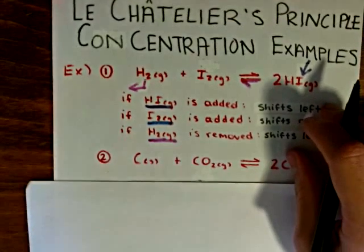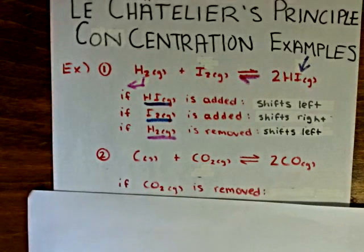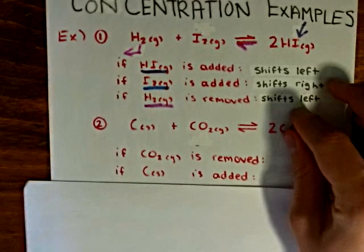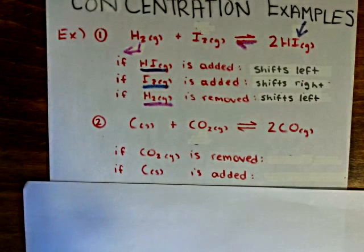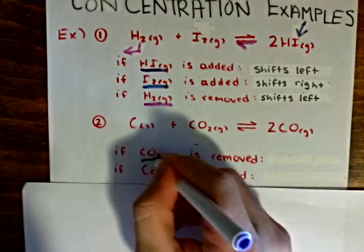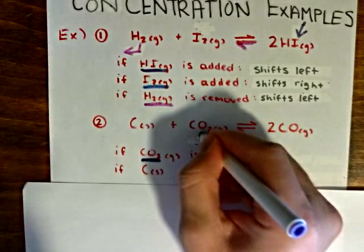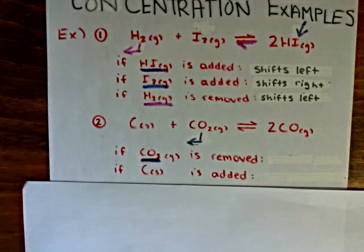Let's look at another problem. Let's say that some carbon dioxide gas is removed. Again, if we remove a species, the equilibrium will shift in order to replace it.